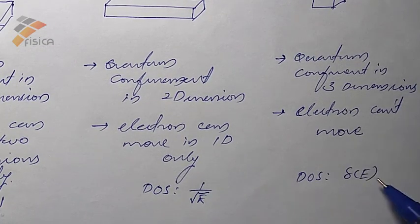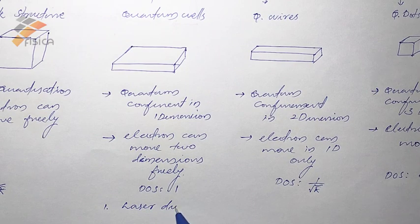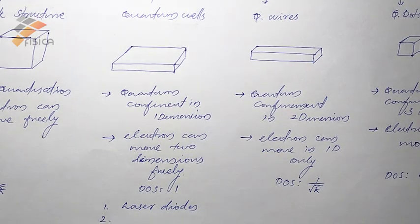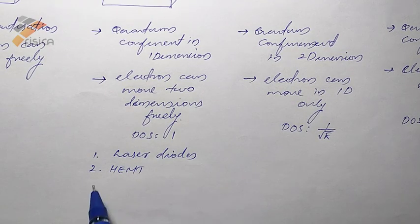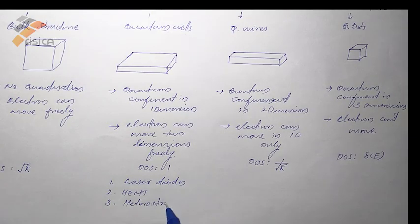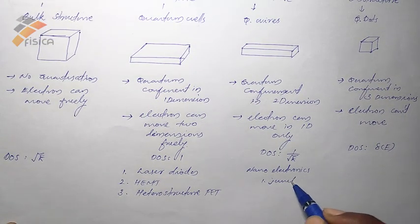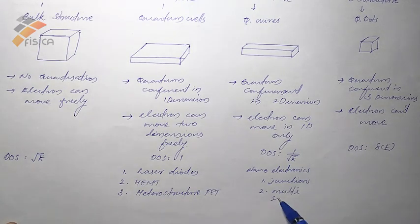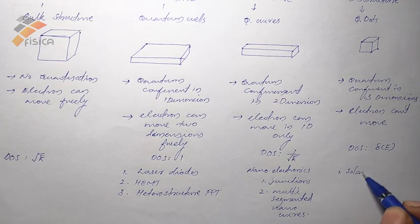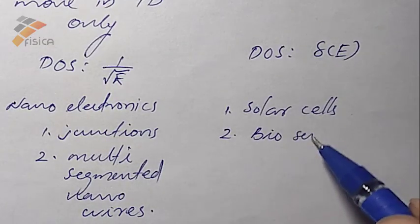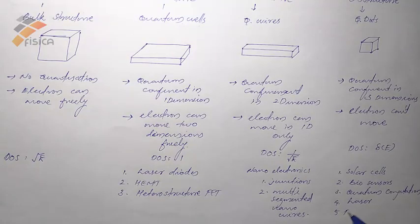Applications of quantum wells are as follows: first is laser diodes, preparation of HEMTs (high electron mobility transistors), and heterostructure FETs. Nanowires are used as junctions and as multi-segmented nanowires. Quantum dots are used in preparation of solar cells, biosensors, quantum computation, and preparation of flat panel displays.